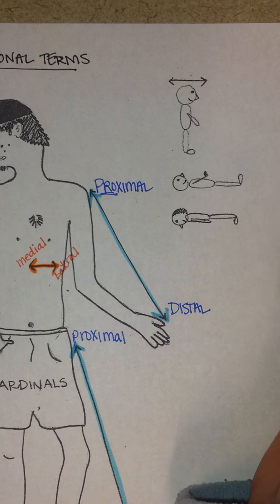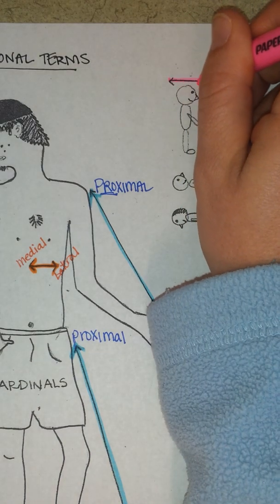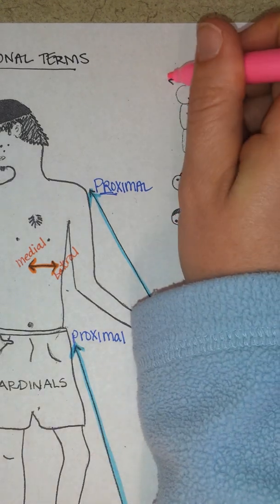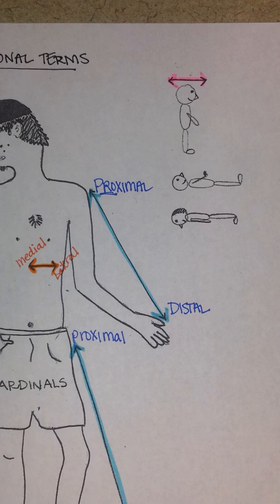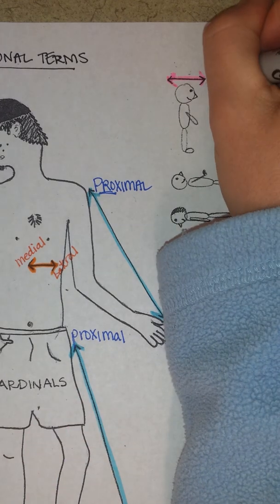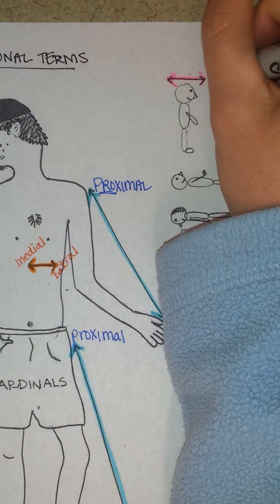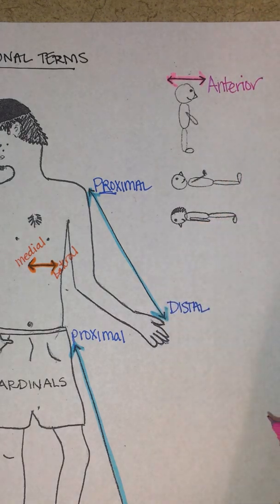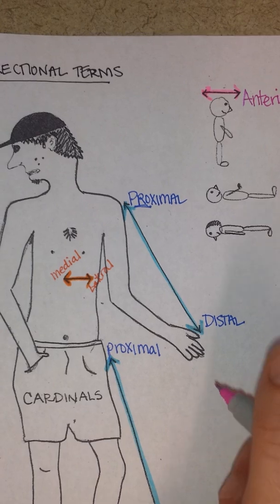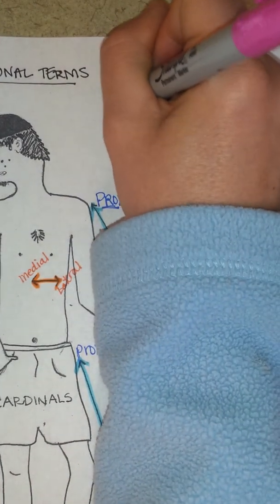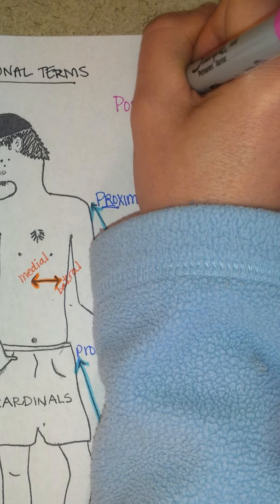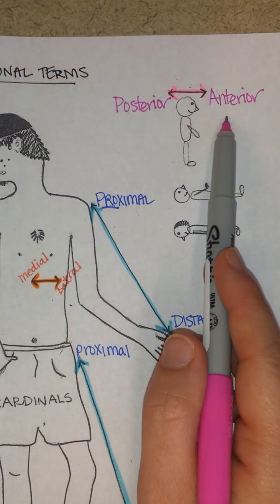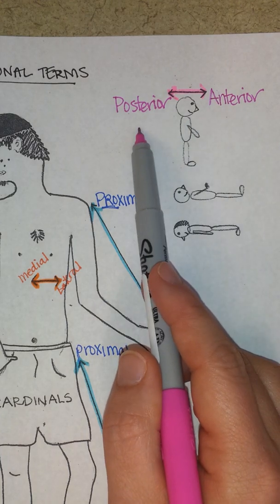Looking at a human from the side, a structure more toward the front of the body is called anterior. If it's toward the back, it's posterior. In fact, my mom used to tell me to keep my posterior in my chair during dinner because I had a hard time sitting still. So anterior is toward the front and posterior is toward the back.